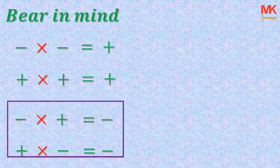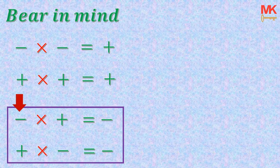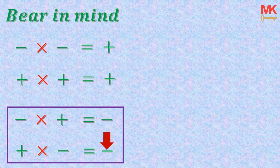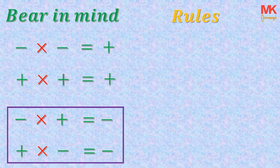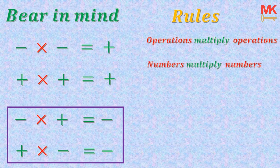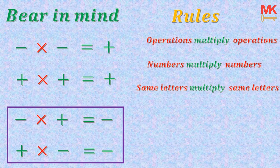If we check the last two multiplications, the first operation is negative and the second is positive — the result is negative. And when a positive operation multiplies a negative operation, the result is also negative. Whenever one of the operations is negative, the result must be negative. Lastly, in carrying out these multiplications, operations multiply operations, numbers multiply numbers, and the same letters must multiply the same letters. The letters you're multiplying must be written in alphabetical order. So let us go into some examples.